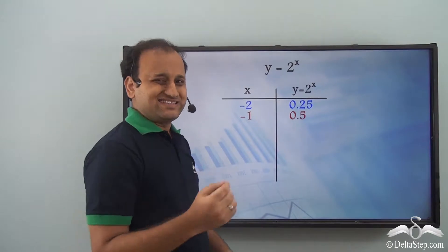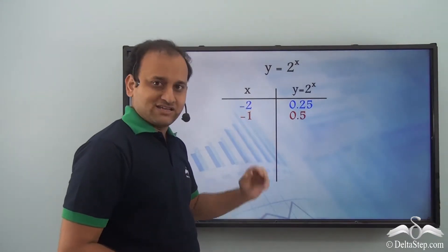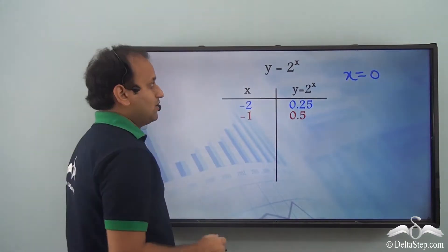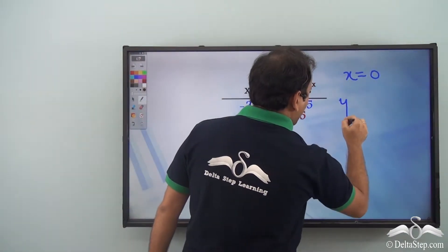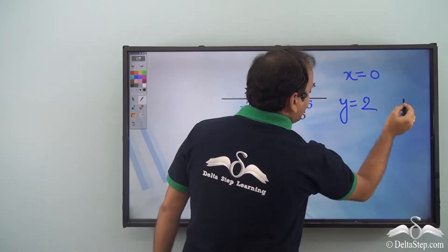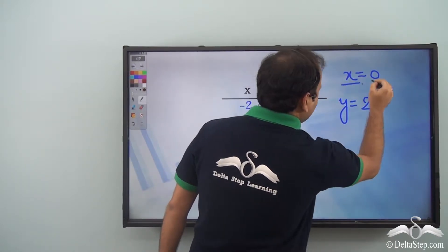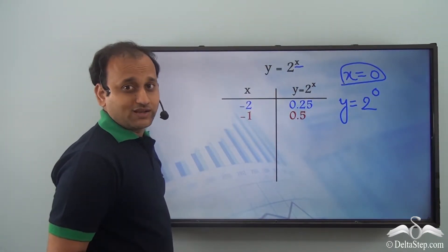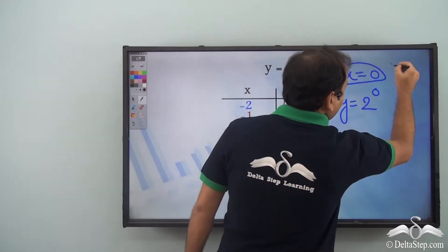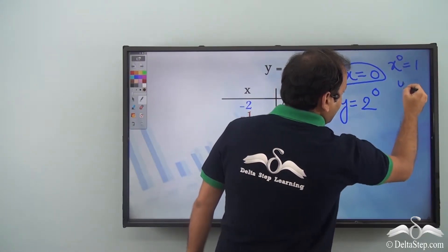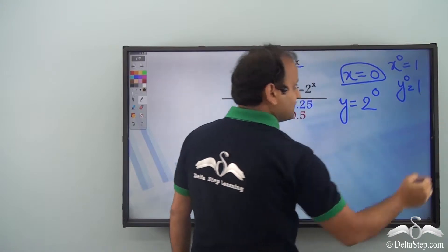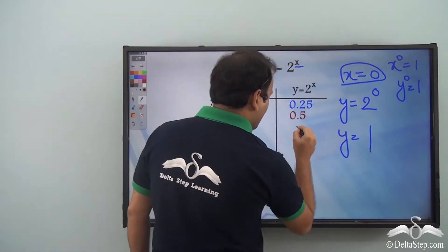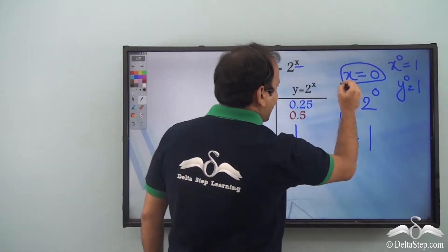Once we have these two values, let's get another one. We've already taken minus 2 and minus 1, so let's take x as 0. The equation becomes y equals 2 to the power of 0. Anything to the power of 0 is always 1 — that's an important property of exponents. So y is equal to 1 when x is 0.